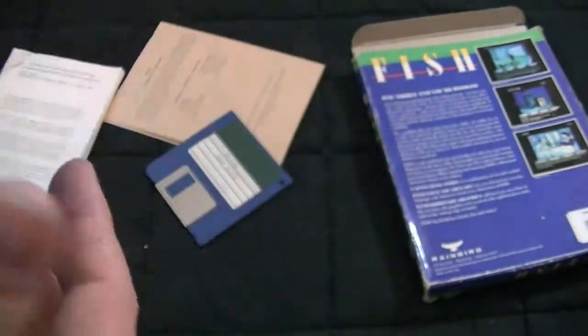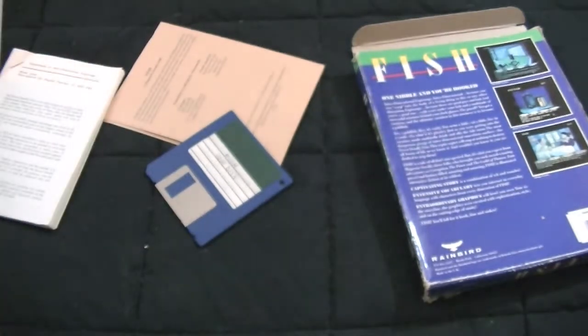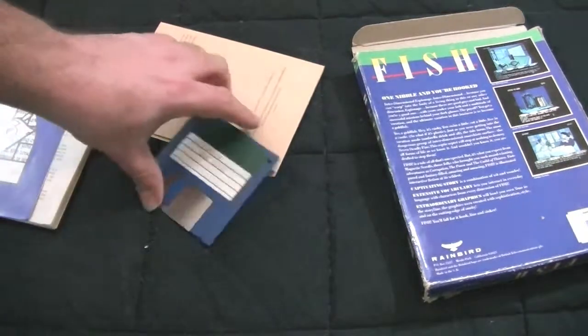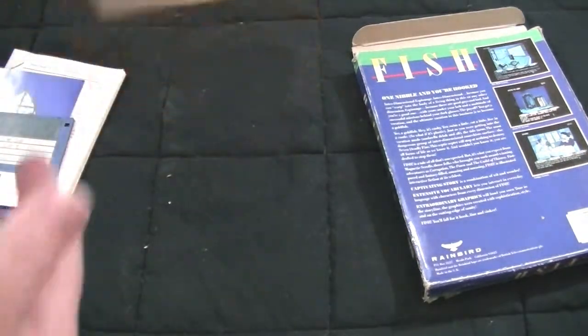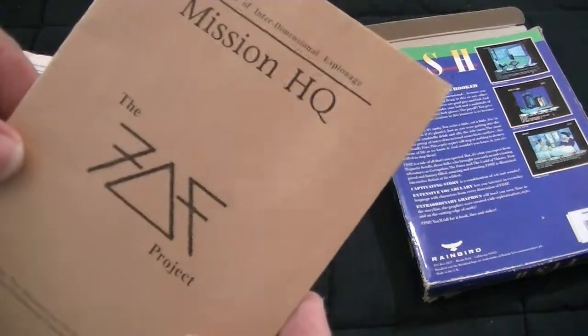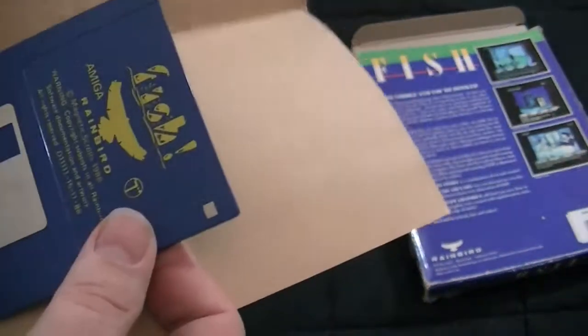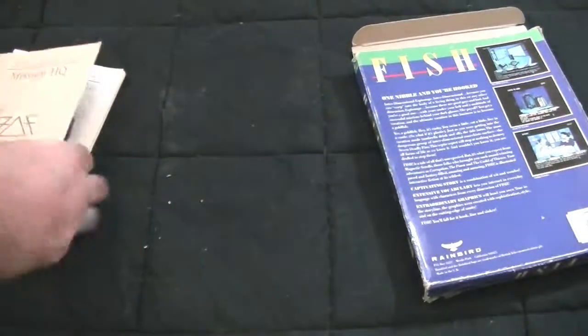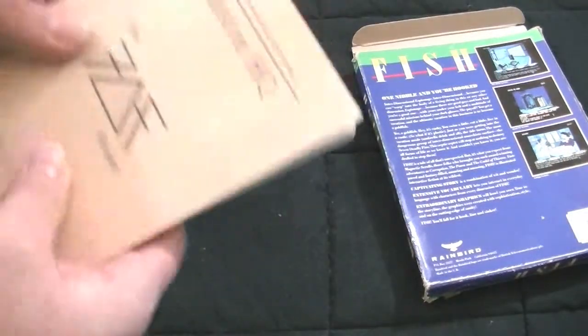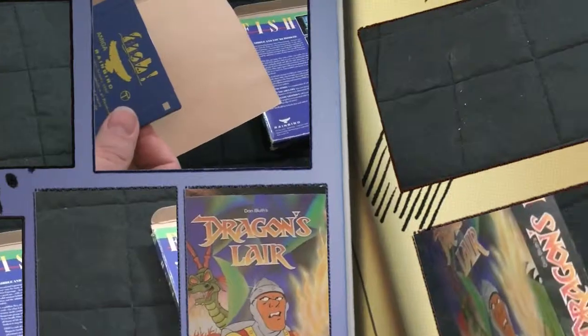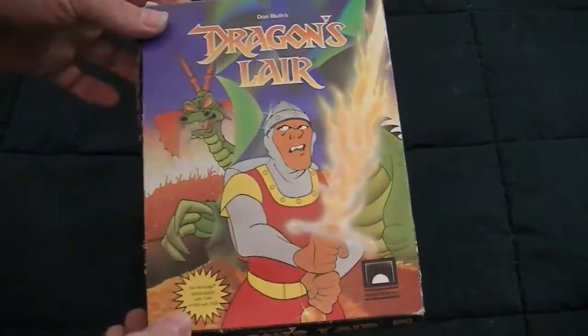Magnetic Scrolls Adventure King. I don't think we had that one. Fish save disc and Mission HQ. Fish. So I'm pretty sure all of that is in character, because it is from that time period.